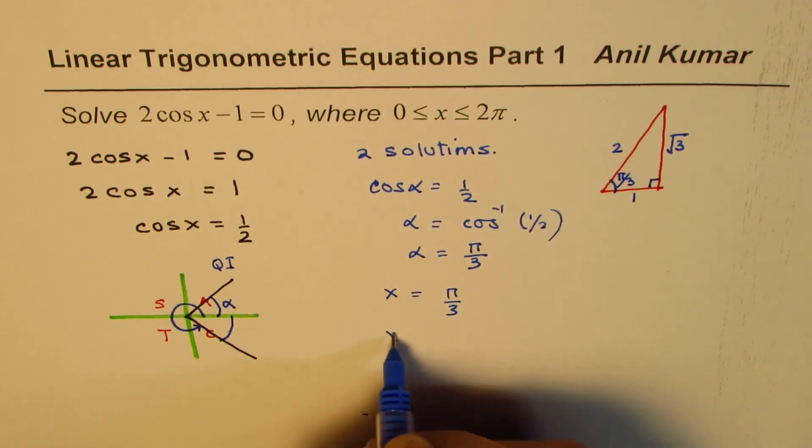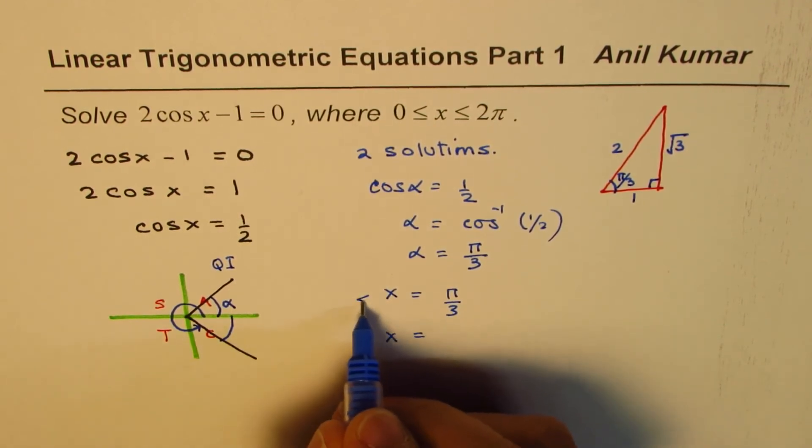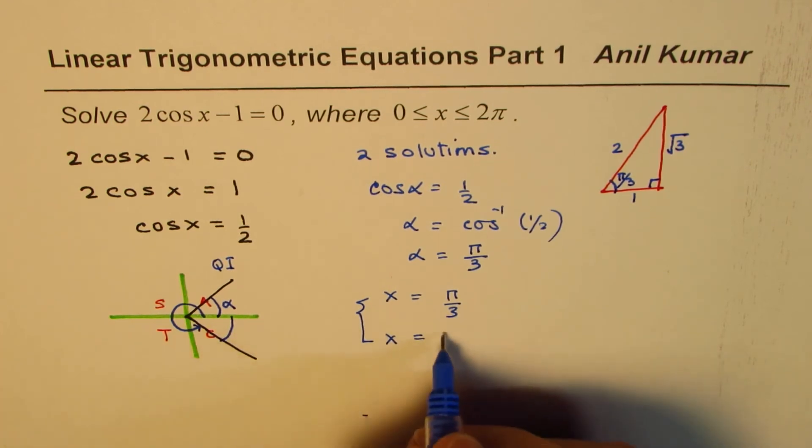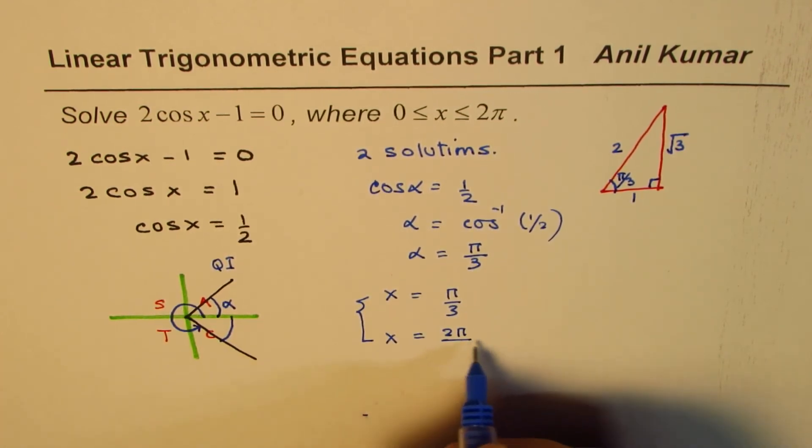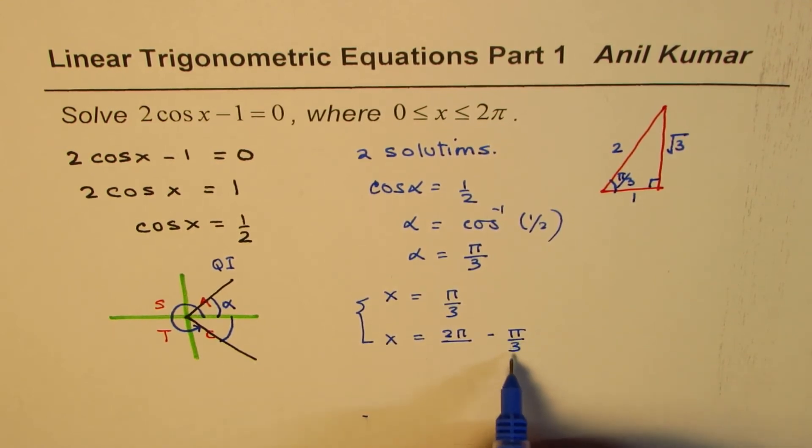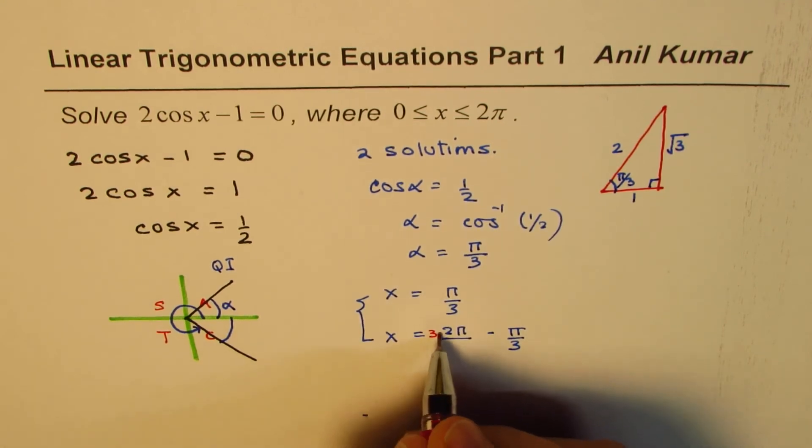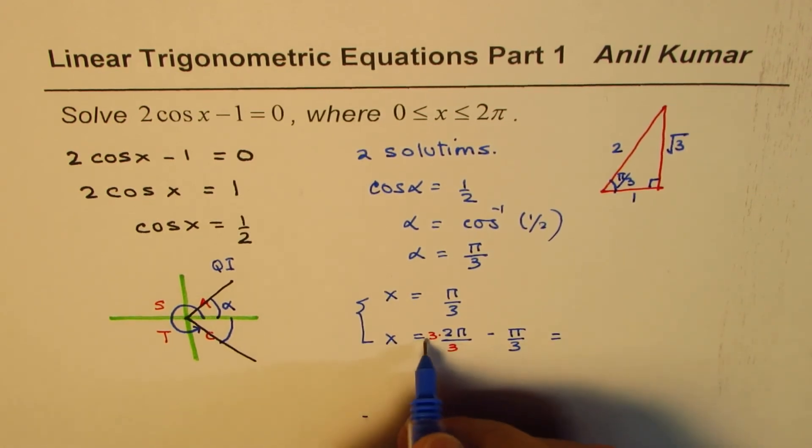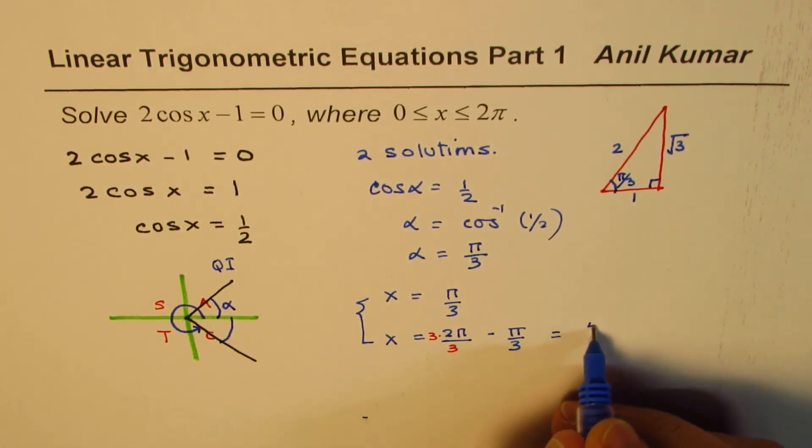The other x value is equal to, there are two values, right? The other one is 2π minus π/3. So since this is a fraction, we can take common denominator, multiplying both by 3. So what we really get here is 6 minus 1, which is 5π/3.